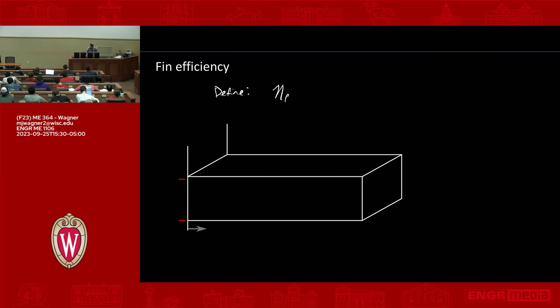So fin efficiency, we call this eta fin. Eta fin is the ratio of the heat transfer to the fin divided by the maximum heat transfer from the fin. So what do I mean? This is a little bit ambiguous.